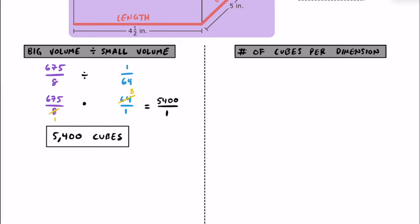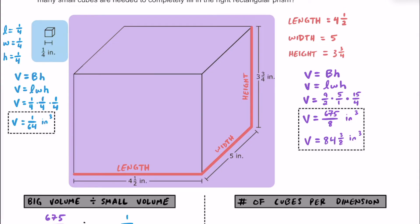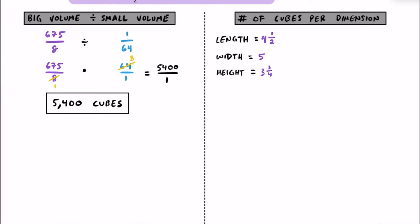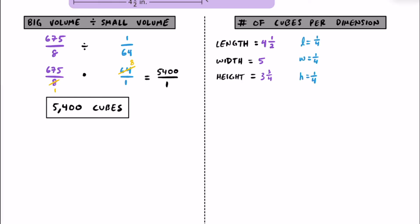That's one way you could solve this problem. Here's another way — I'm going to call this second method the number of cubes per dimension. We know the length, width, and height of the right rectangular prism are 4 and a half, 5, and 3 and three fourths. For this strategy, we're going to see how many one-fourths fit inside of 4 and a half, how many one-fourths fit inside of 5, and how many one-fourths fit inside of 3 and three fourths. If we can figure out all those numbers and then multiply them together, that'll tell us how many little cubes we're going to have.